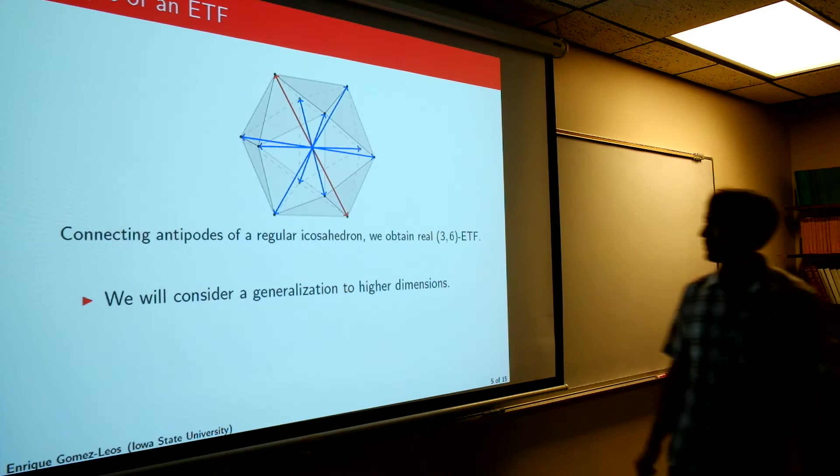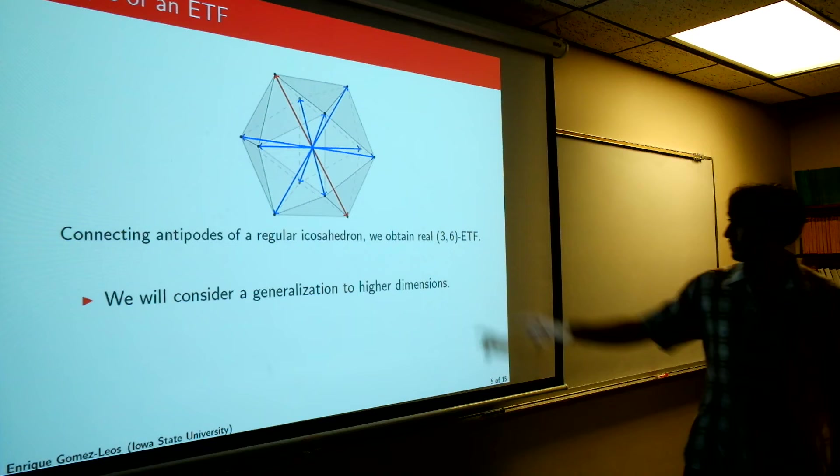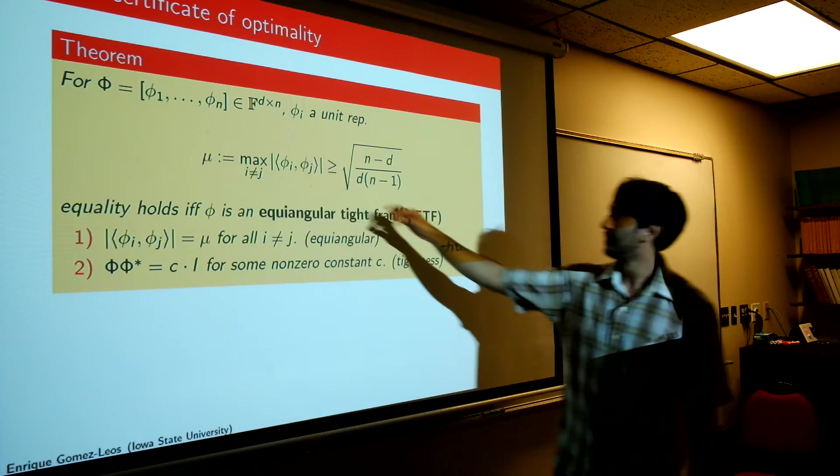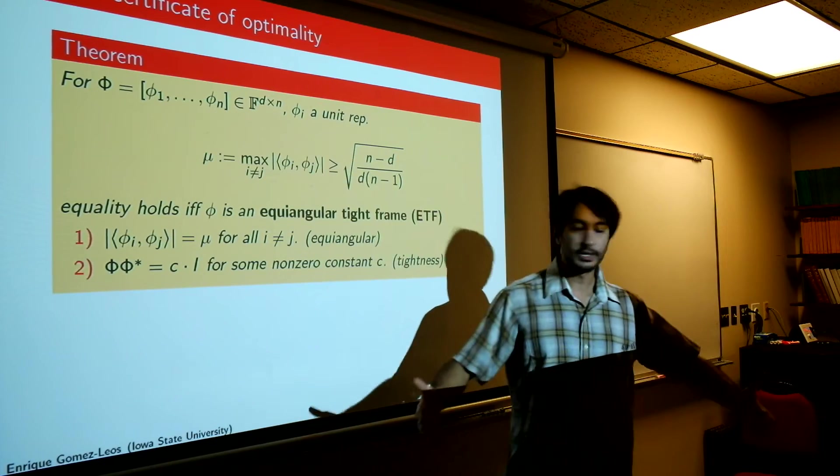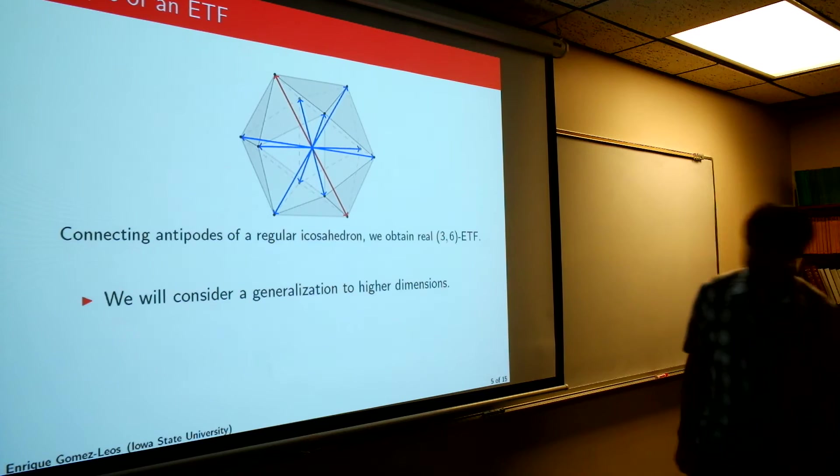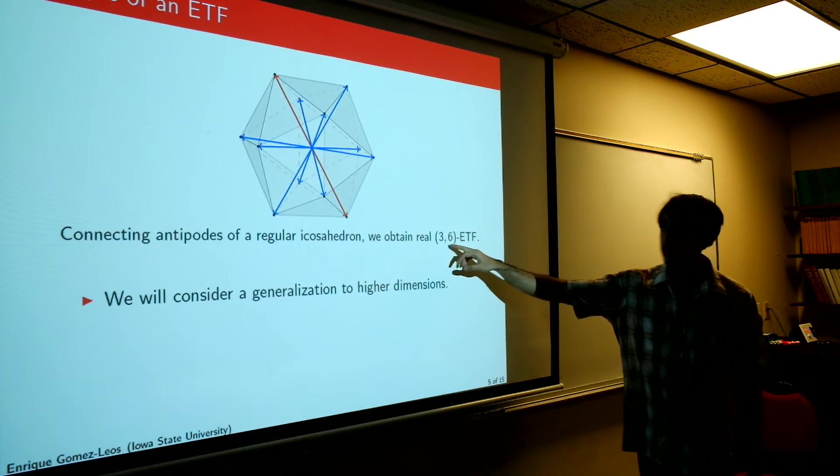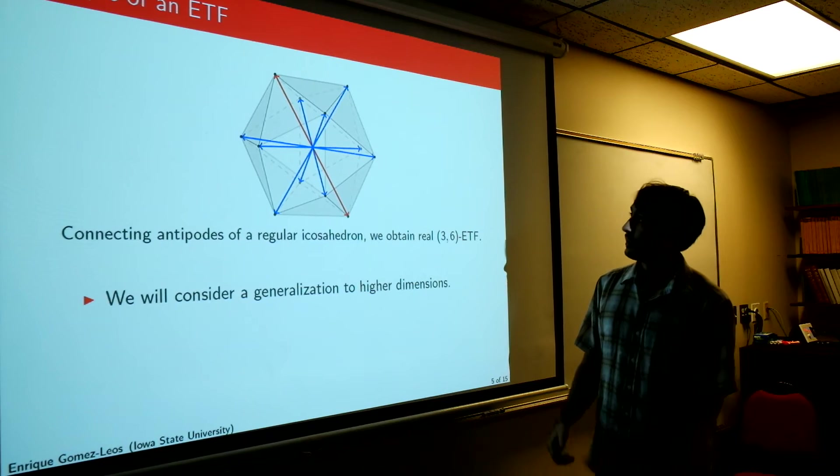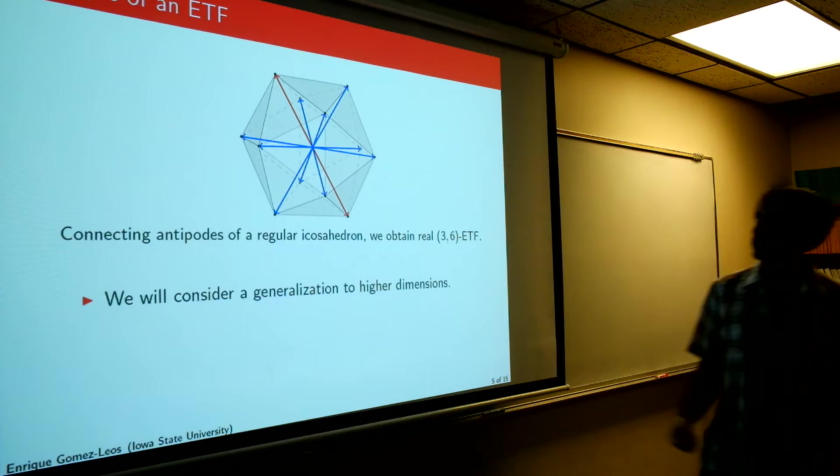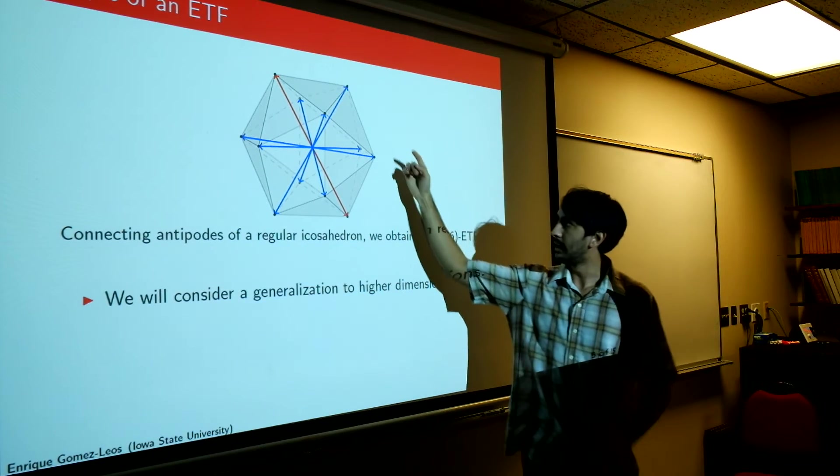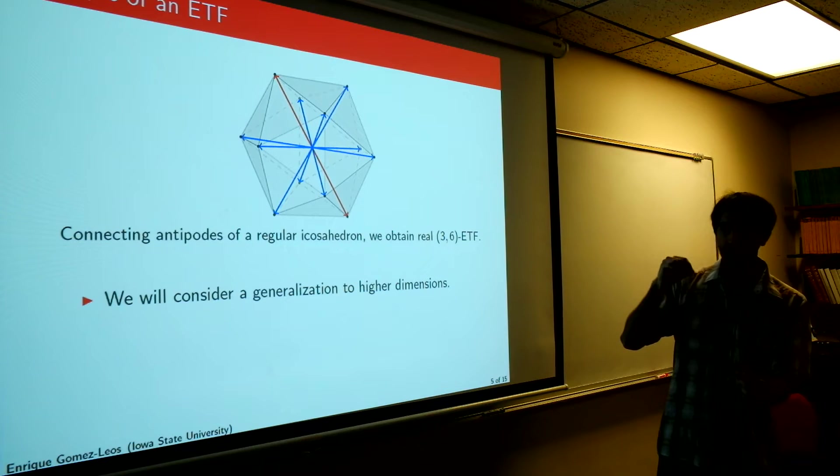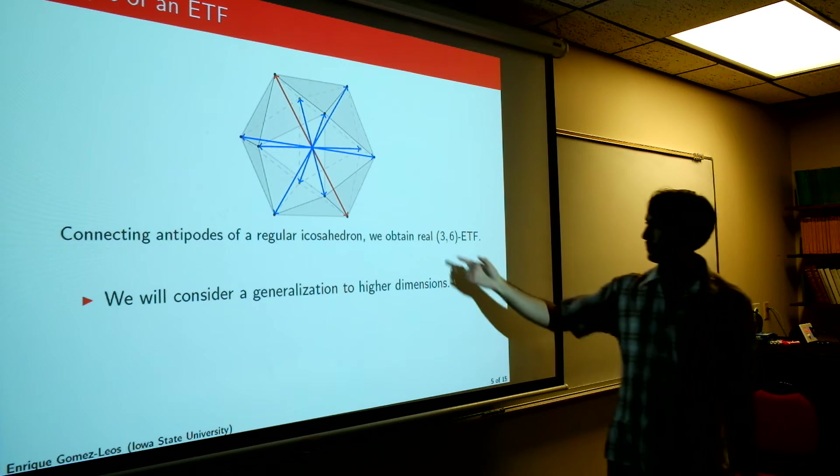So here's an example. An example of a 3, 6 ETF, so this 3 parameter is the same as the one in the previous slide. I'm saying that D is 3, this is the ambient dimension, and N is the number of lines I have. So here I will construct for you a 3, 6 ETF, so I will construct 6 lines in R^3, in a real vector space. So the way I do this is I take a regular icosahedron, and so I have 12 vertices on my icosahedron, and I associate lines between them. And this turns out to be a 3, 6 ETF.